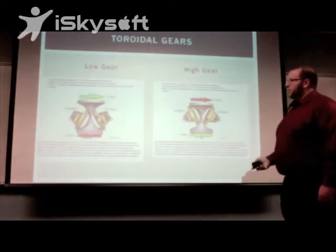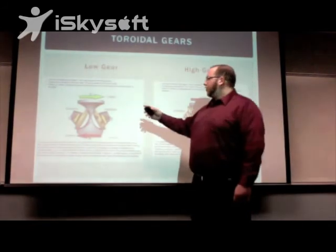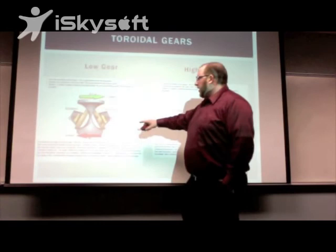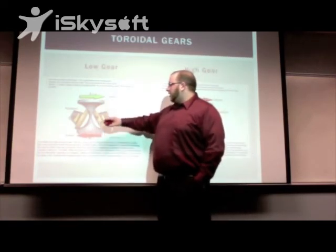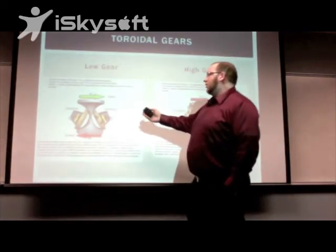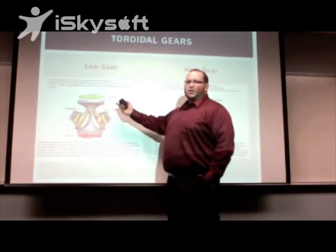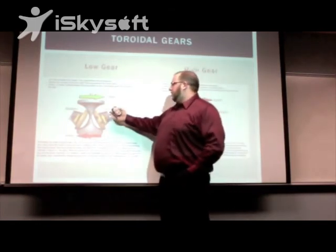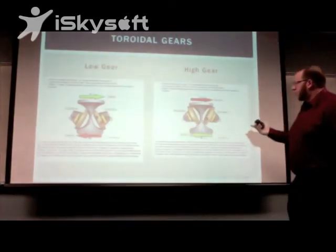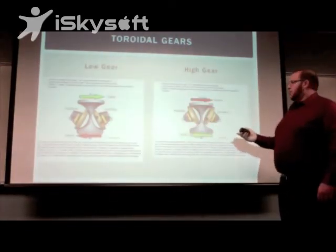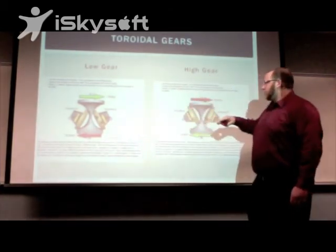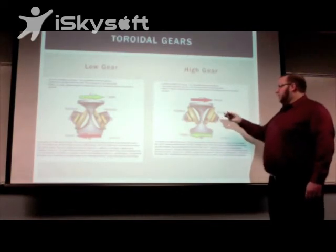In toroidal gears, you have the same conical cones but you use idlers instead. These idlers can rotate and depending on the contact area will determine the gear ratio. In this low gear, it operates the same as the belt pulley system — you have a lower gear for torque. In the high gear situation, this is for high speed. The idlers gradually move as you're driving to change the contact area, which changes the gear ratio.